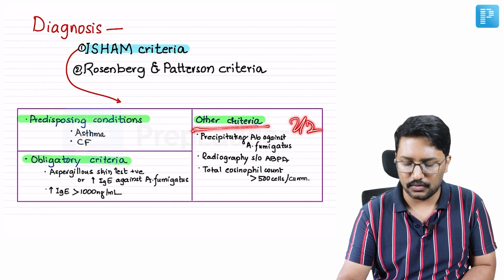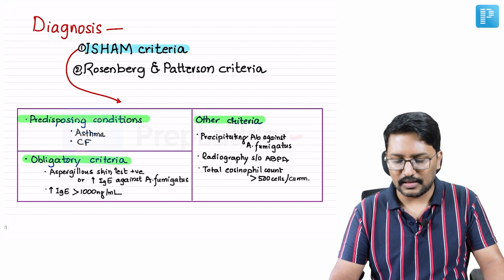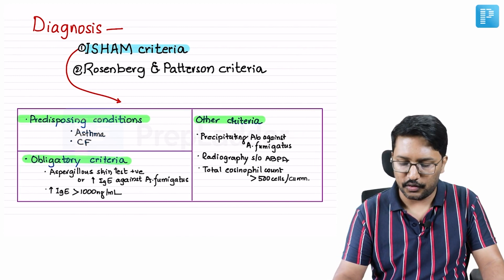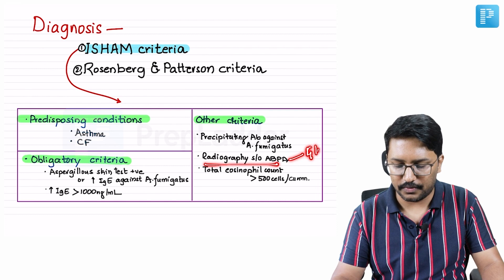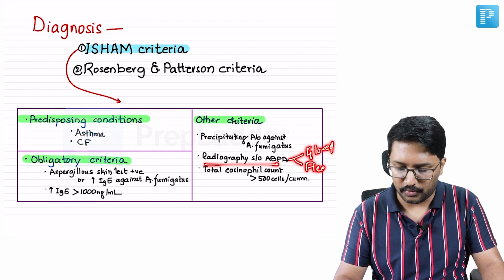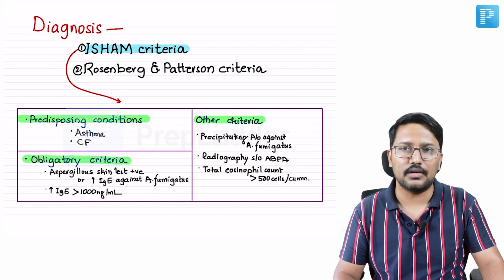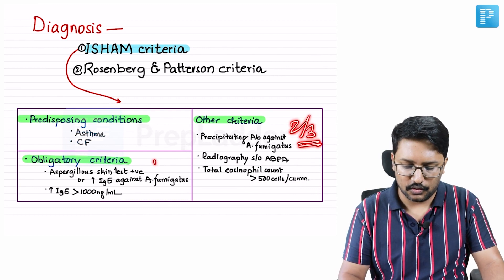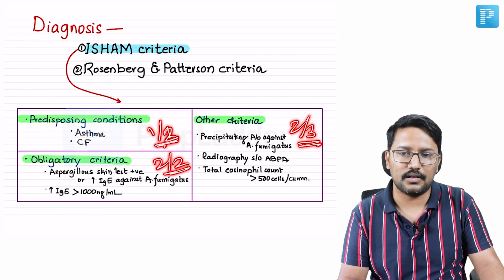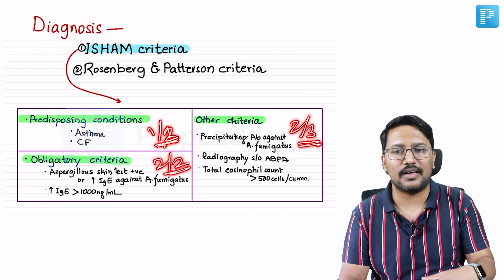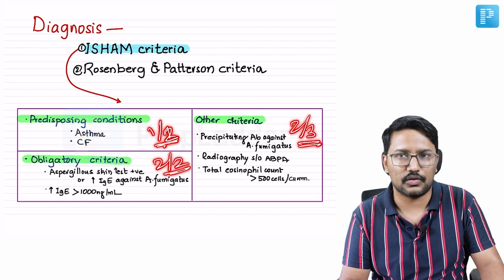Then there are other criteria where two out of three should be present. These three criteria are: precipitating antibodies against Aspergillus fumigatus; radiography suggestive of ABPA — that is the gloved finger sign and fleeting pulmonary opacities; and total eosinophil count more than 500 cells per cubic millimeter. Two out of these three, plus all obligatory criteria, plus one predisposing condition must be present to diagnose ABPA with reasonable confidence.